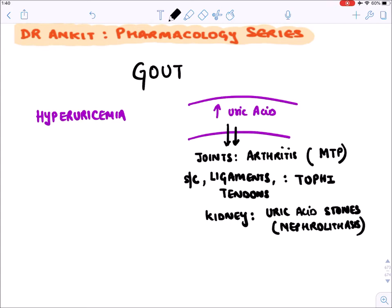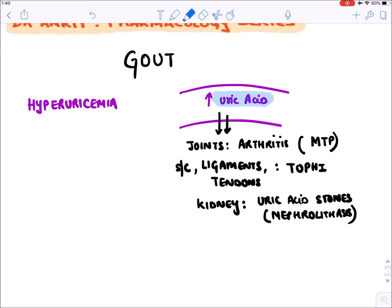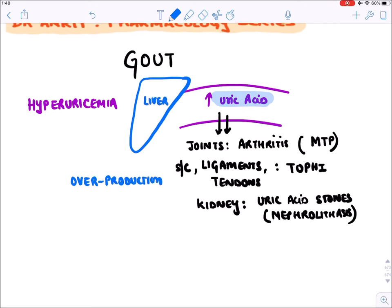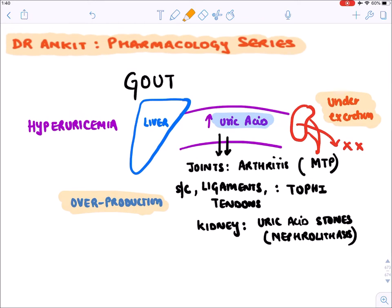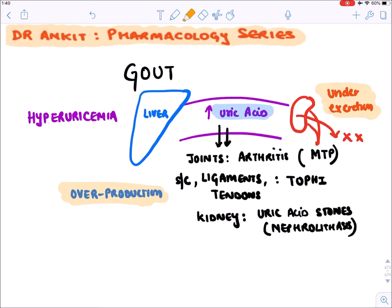The basic question is: why is uric acid level increased in the blood? It is either due to overproduction inside the liver or due to under-excretion through the kidney into the urine. These are the two main causes of hyperuricemia or gout.